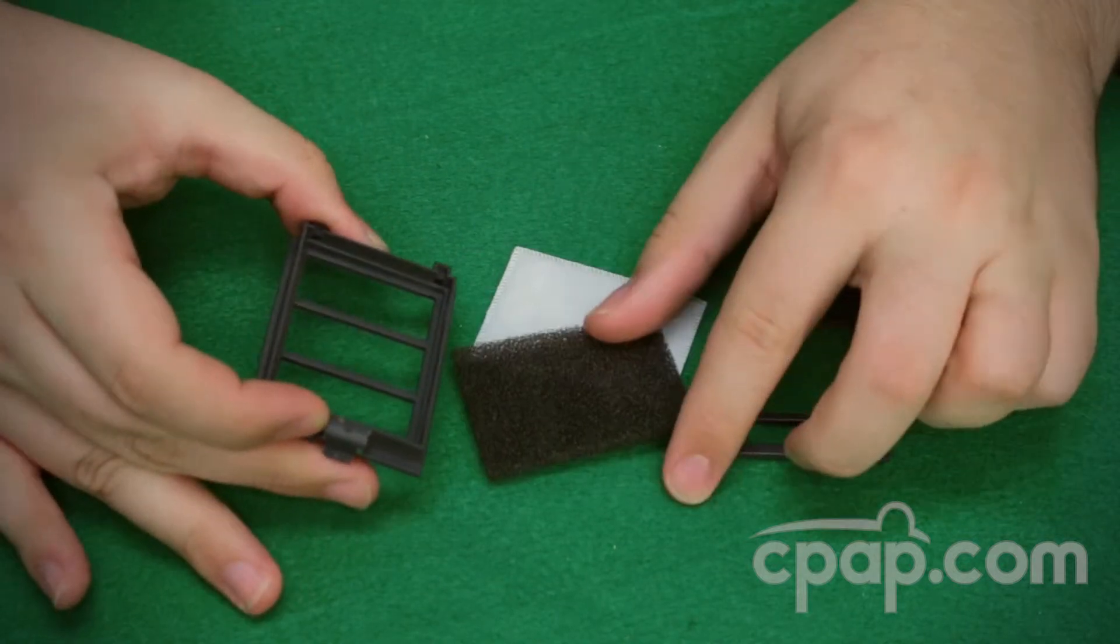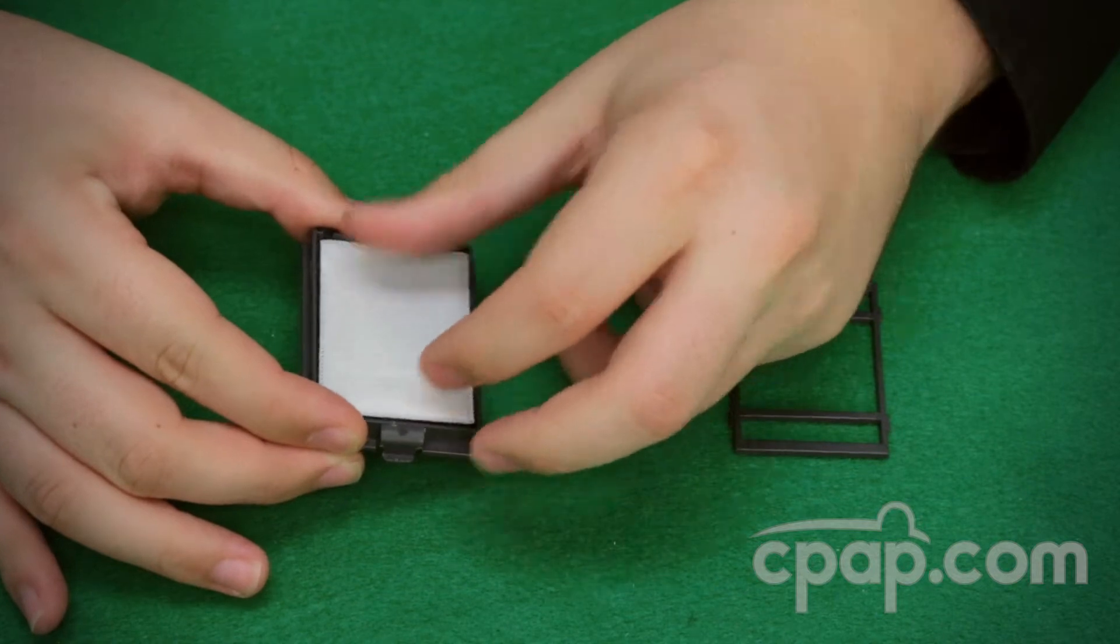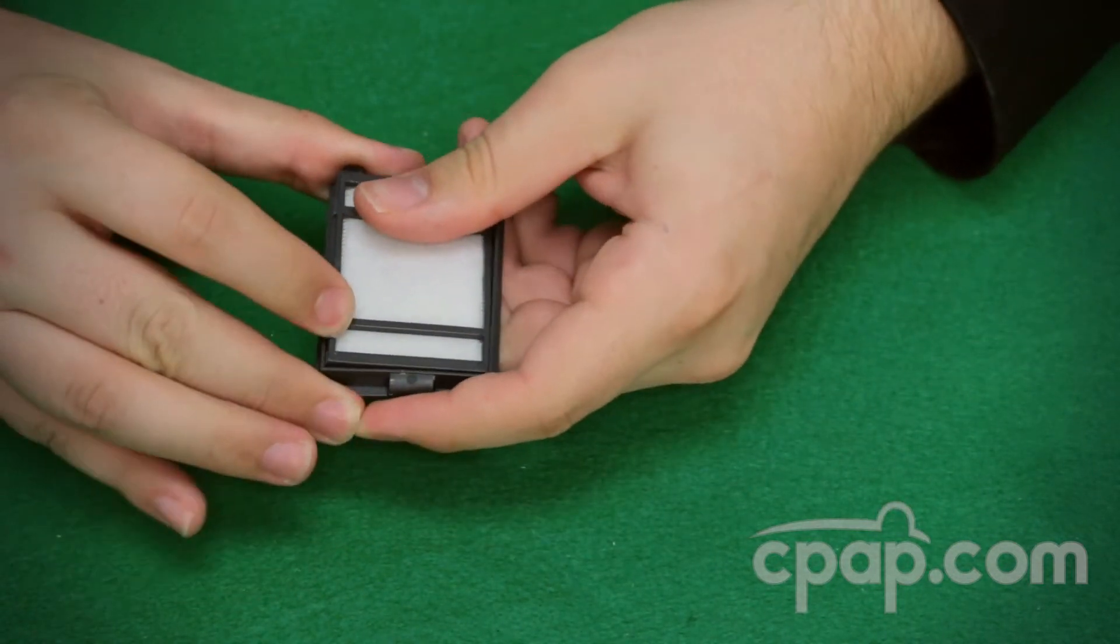To reassemble, place the black foam filter into the cassette frame, place the white filter on top, then snap the cassette back into place.